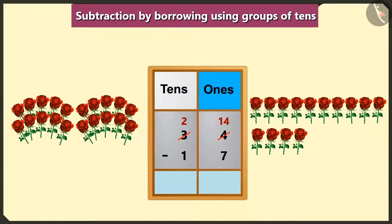Now, first of all, we subtract in the ones place. Subtracting one, two, three, four, five, six, and seven leaves seven in the place of ones.